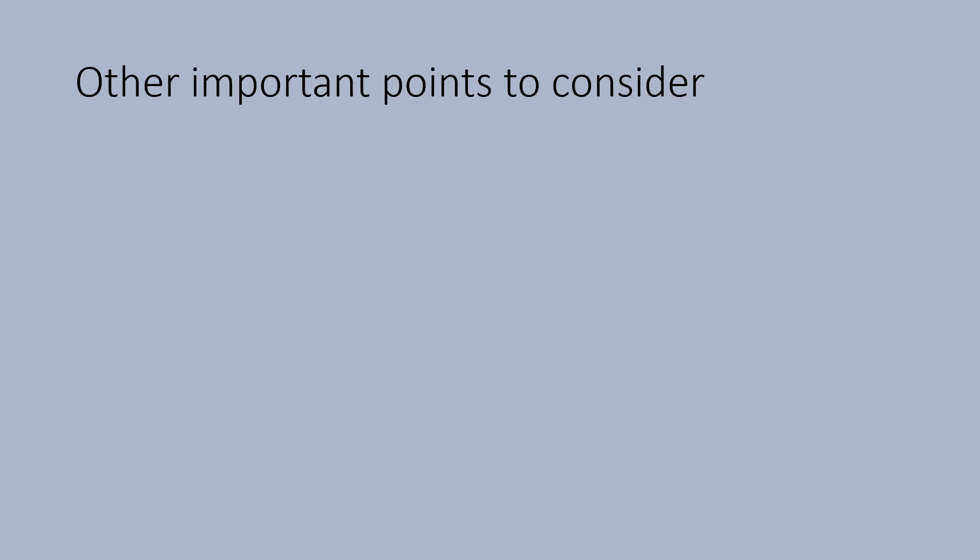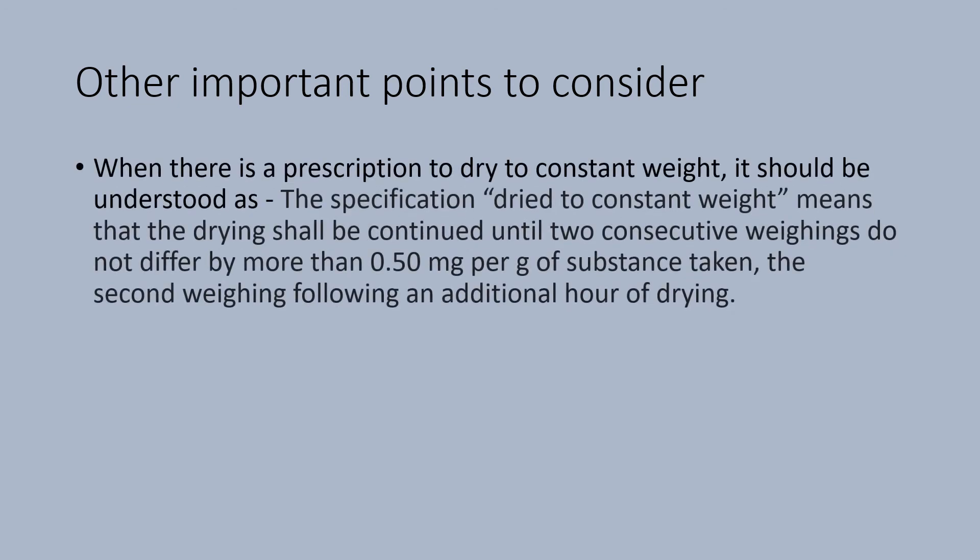Let us see other important points to consider. When there is a prescription to dry to constant weight, it should be understood that the specification dried to constant weight means that the drying shall be continued until two consecutive weighings do not differ by more than 0.50 mg per gram of substance taken. The second weighing following an additional hour of drying. The difference should not be more than 0.50 mg per gram of the sample taken.